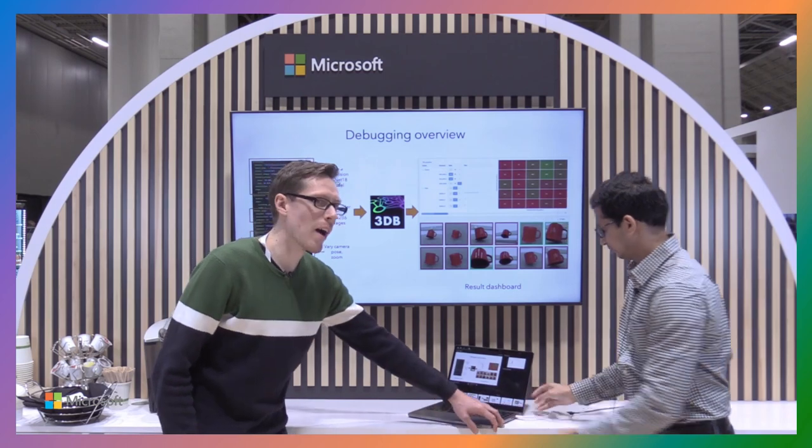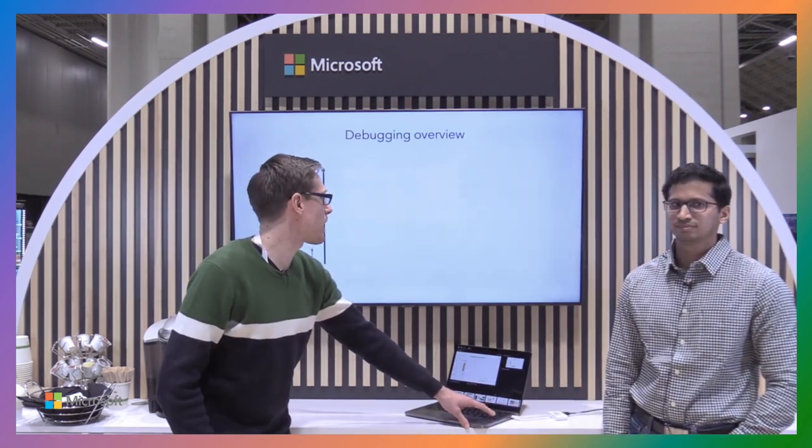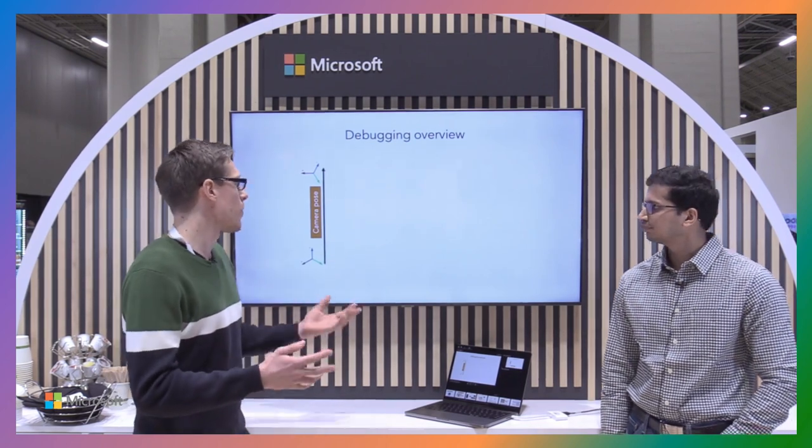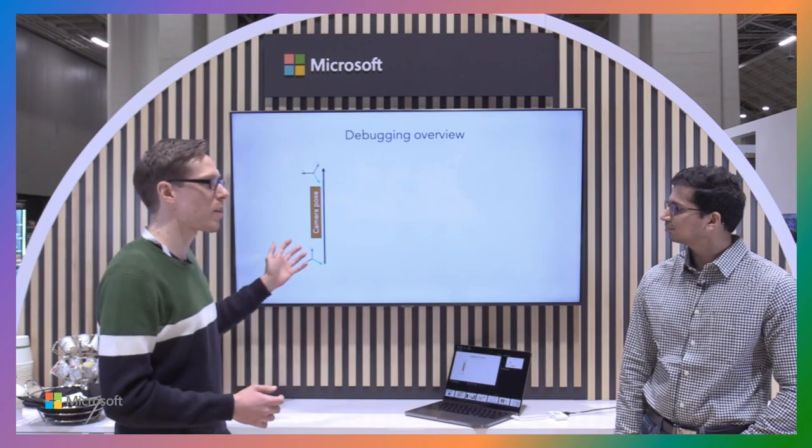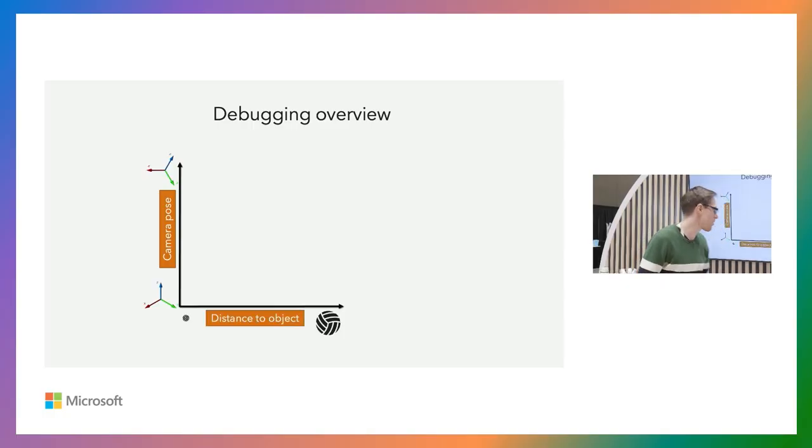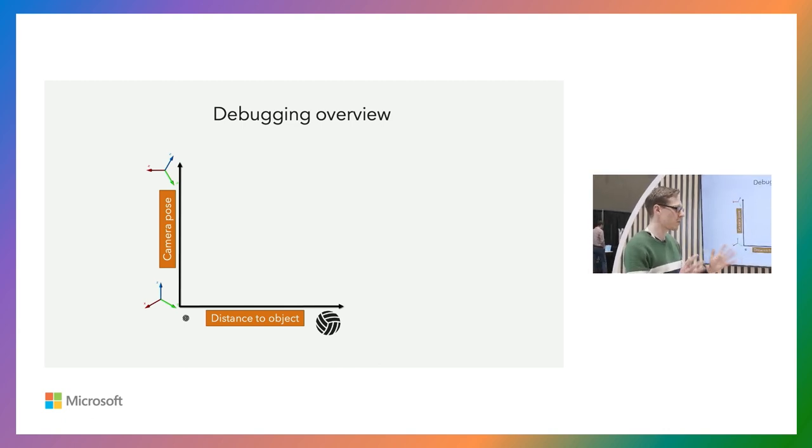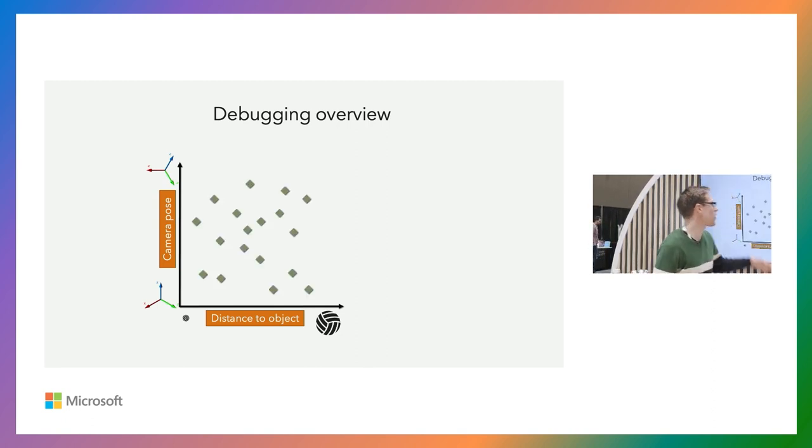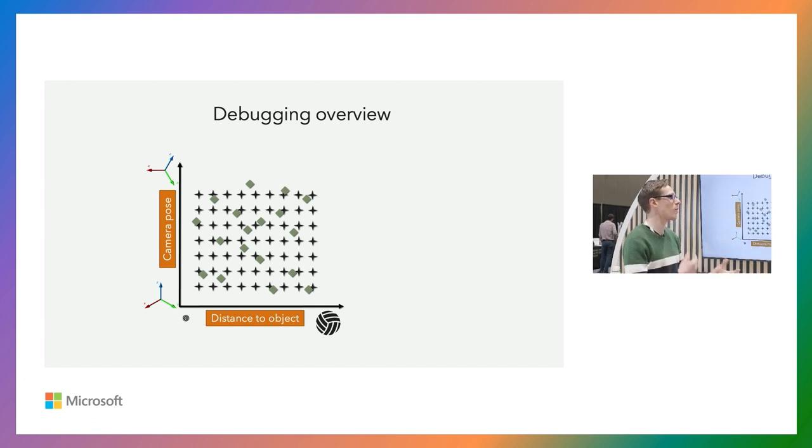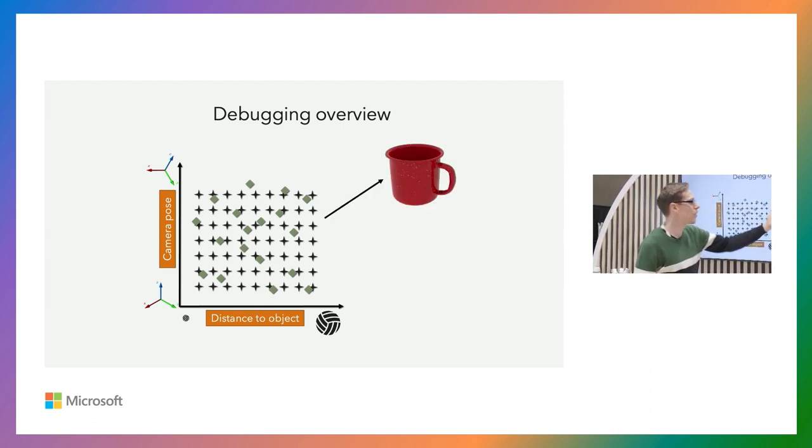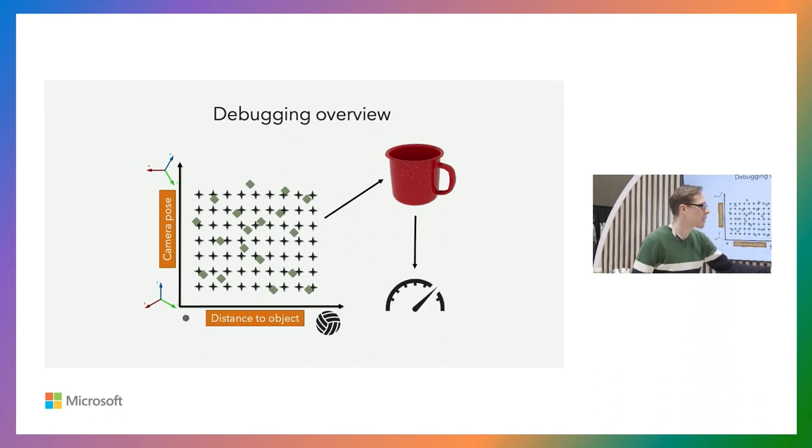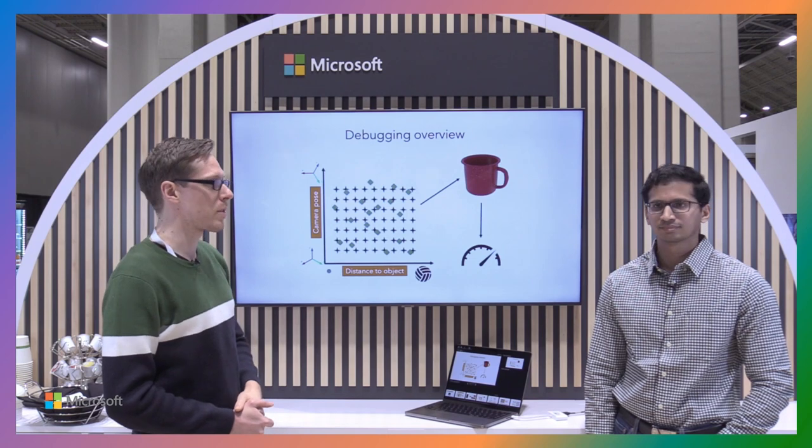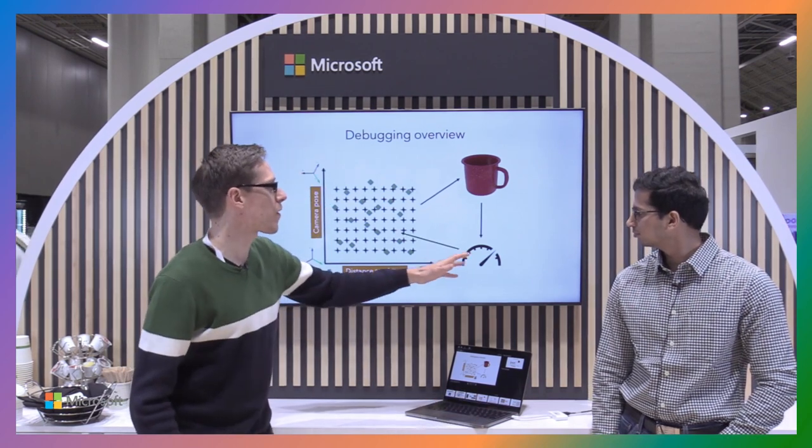So now I would like to hand it off to Guillaume. Thank you, Sai. I'm going to start with a little example and show what this rendering space is with two dimensions here. We're going to start with the camera pose and also consider the distance to an object. This forms what we call the rendering space. We can have any points in the space and you can explore it with 3DB using either a random search pattern or a grid search, which can be very useful if you're doing some sort of causal understanding.